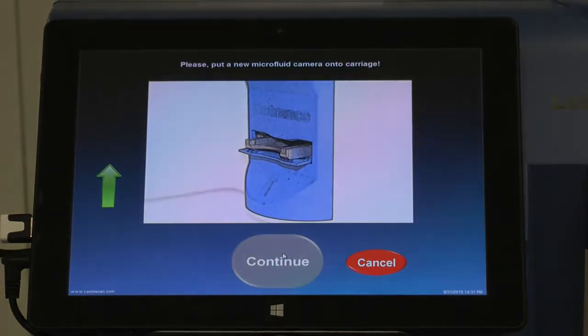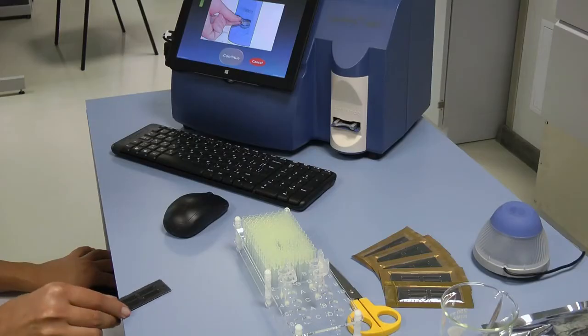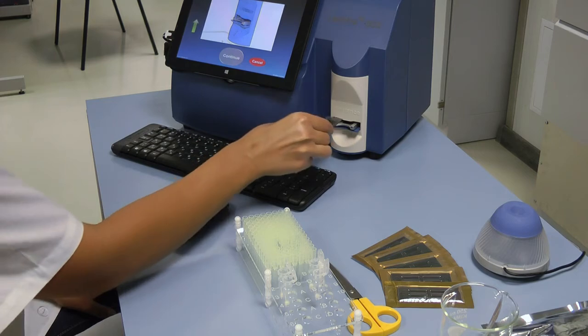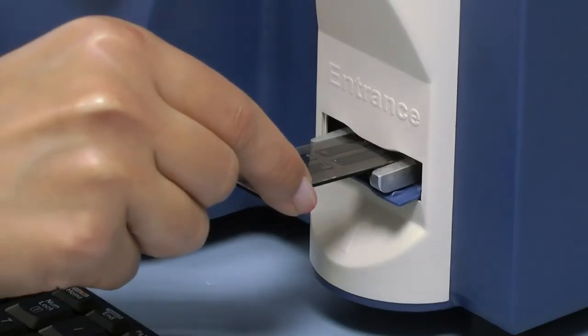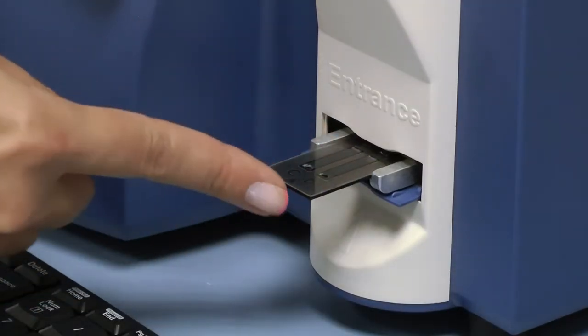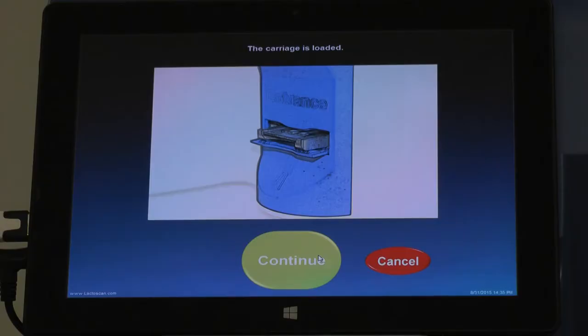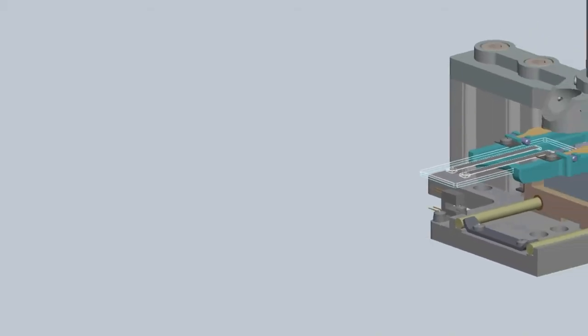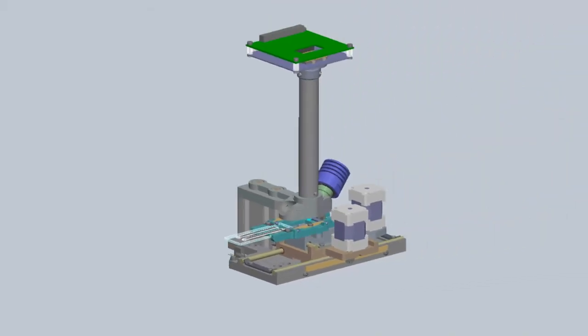On the screen, a message will be displayed showing that the carriage for placing the LactoChip comes out of the door. Place the LactoChip into the carriage and press Continue. The device is now making the analysis of the samples.